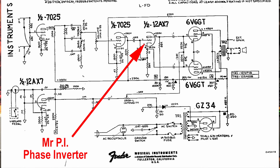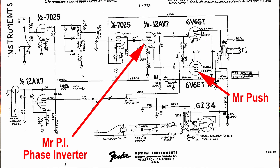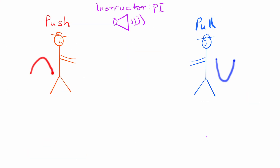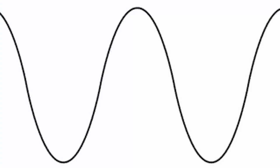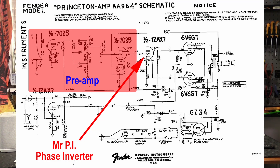I'd like to introduce you to Mr. P.I. and Mr. Push. Top of the morning to you, Mr. P.I.! Well, to help you better understand the four different classes, we will be using the analogy of soaring through a log with a double-ended saw. So let's start with Class B. We are going to use a sine wave to represent the guitar signal, amplified many times its original size, thanks to my colleagues in the preamp department.